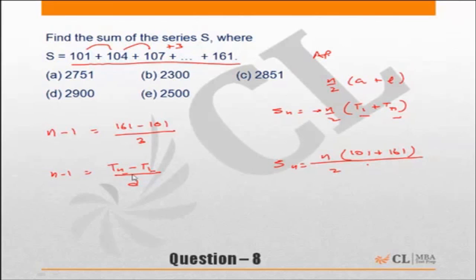What is the n? n minus 1 is here. The same terms out here. You should get the number of terms. d out here is 3, so this becomes equal to 20. So n is equal to 21.